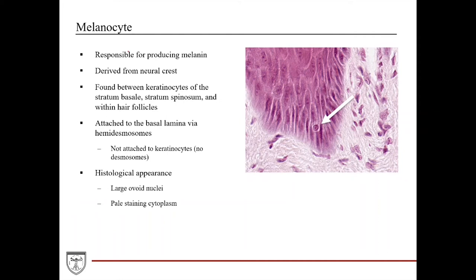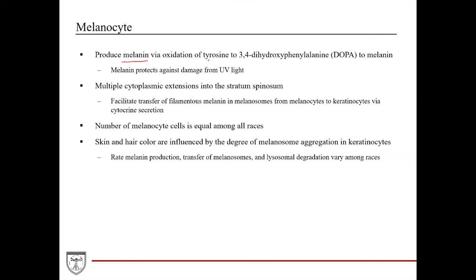Melanocytes are cells responsible for producing melanin. Embryologically they're derived from the neural crest. Location-wise, they're found between keratinocytes in the stratum basale and stratum spinosum layers, and within hair follicles, since melanin contributes to both skin color and hair color. In the basal portion, melanocytes can form attachments to the basal lamina via hemidesmosomes; however, they do not form desmosomes with keratinocytes. Histologically, they have large ovoid nuclei with pale staining cytoplasm. Functionally, they produce melanin via oxidation reactions: first oxidizing tyrosine to DOPA, then oxidizing DOPA to melanin. The main function of melanin is to protect against damage from UV light, in addition to contributing to skin and hair color.